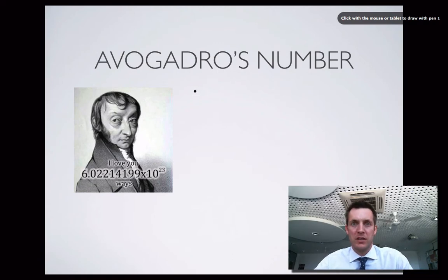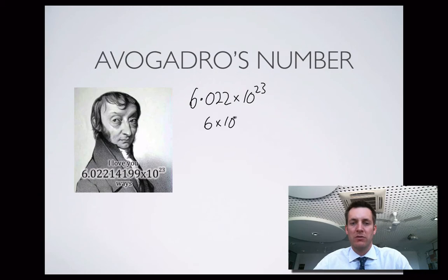Because he came up with this number, it was named after him: 6.022 times 10 to the 23, or roughly 6 times 10 to the 23, or in other words 6 with 23 zeros after it. So it's a big number, but just how big that is we'll see in just a minute.